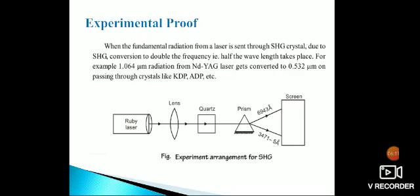This is the experimental setup. There's a ruby laser or Nd:YAG laser, then a lens for forming parallel beams, a quartz crystal, and a prism that diffracts the waves. Finally, we can see it on the screen.